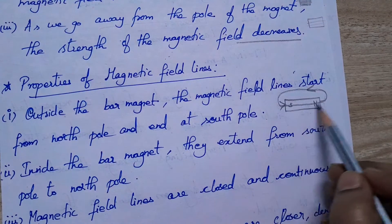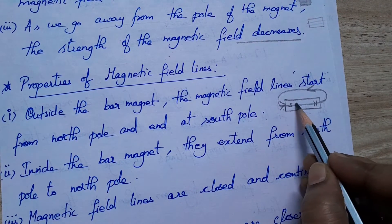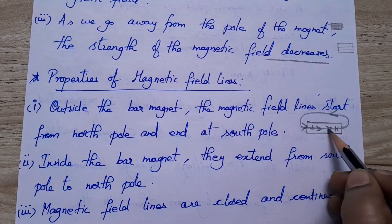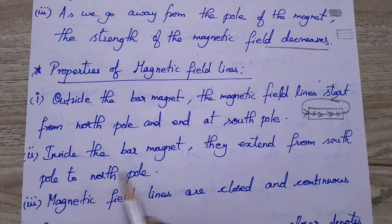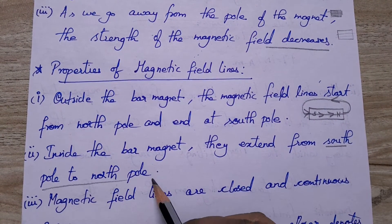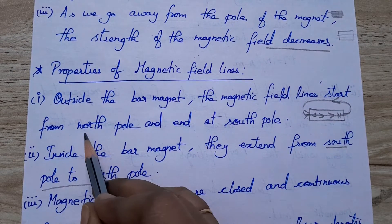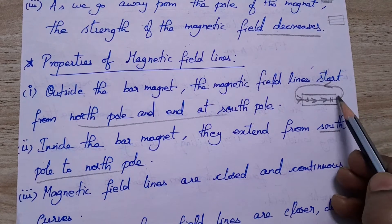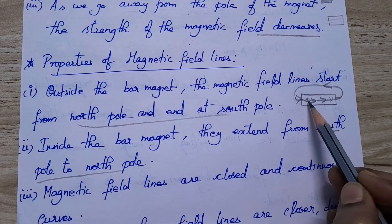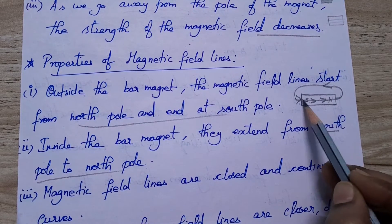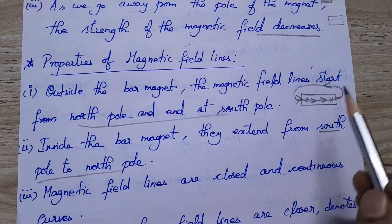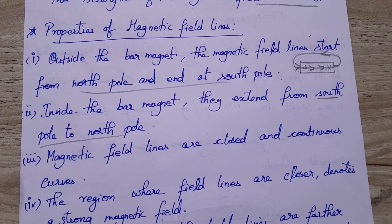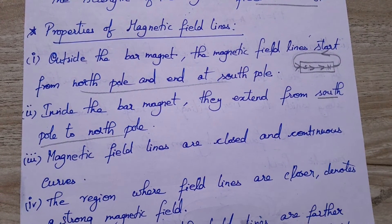Inside the bar magnet, to make it a continuous closed path, the field lines extend from the south pole to the north pole. So outside it goes north to south, and inside it goes south to north — that gives you a closed, continuous curved path. The magnetic field lines are closed and continuous curves.